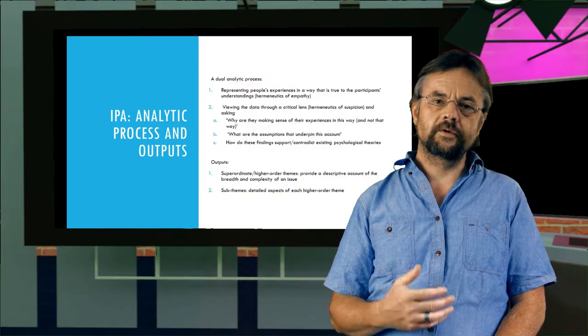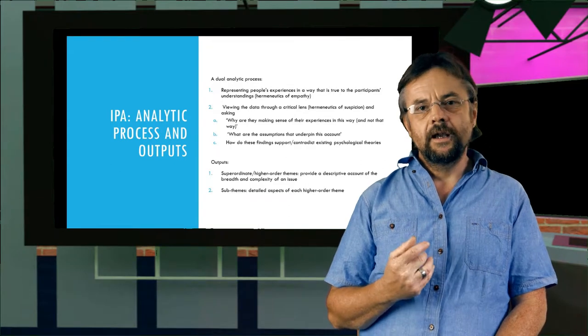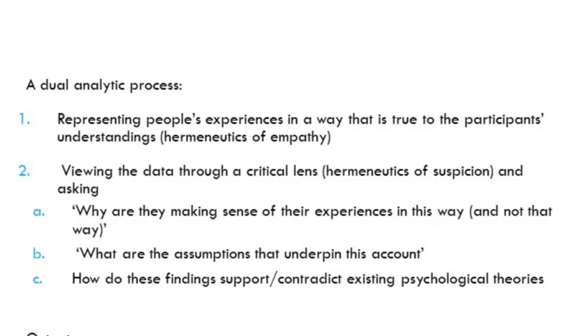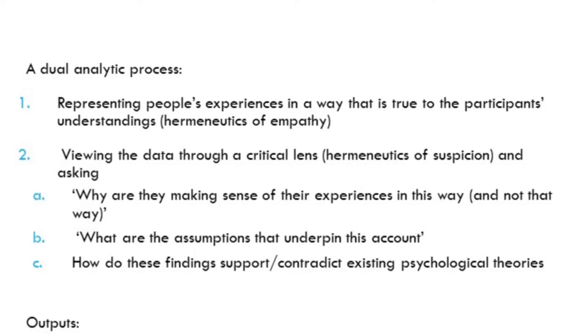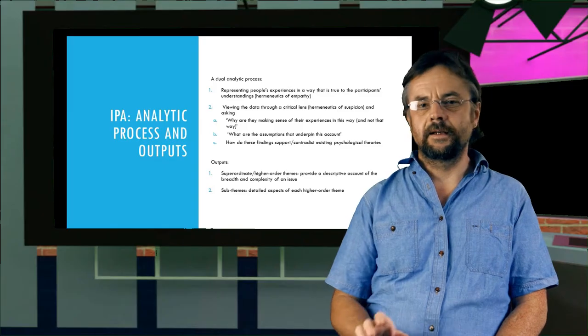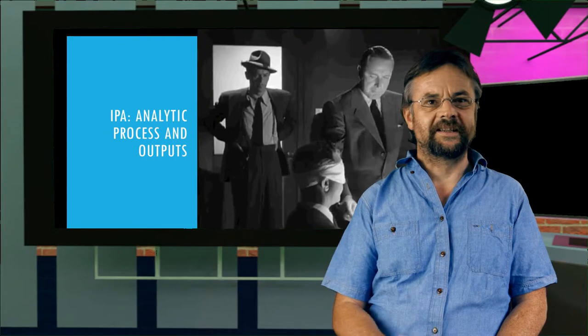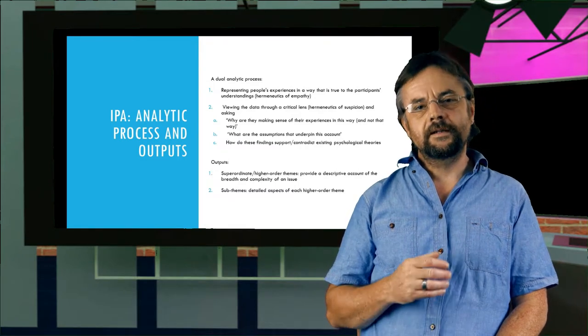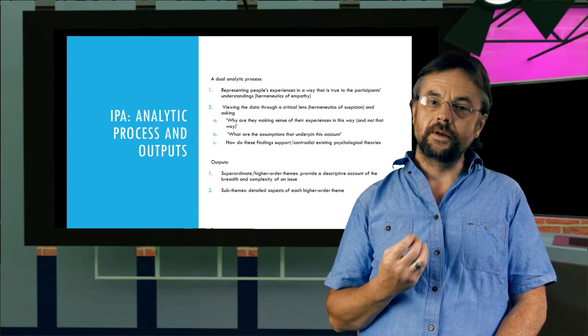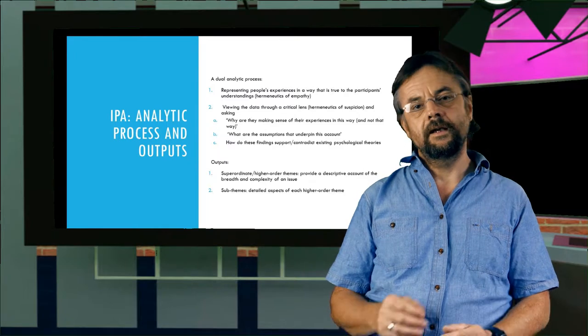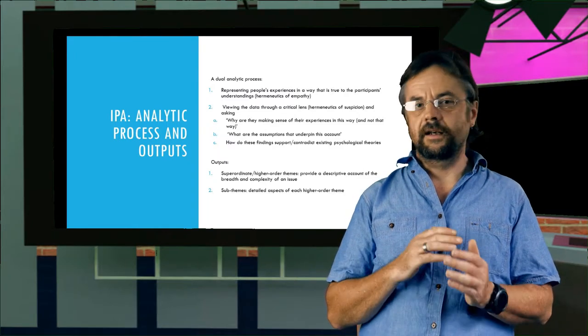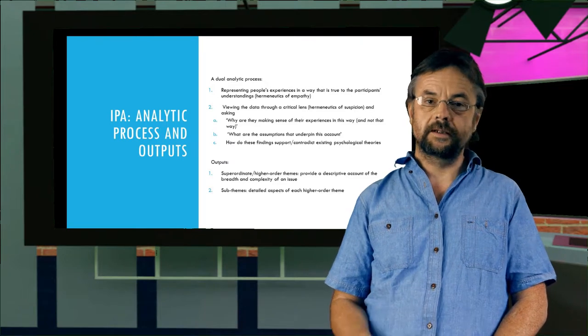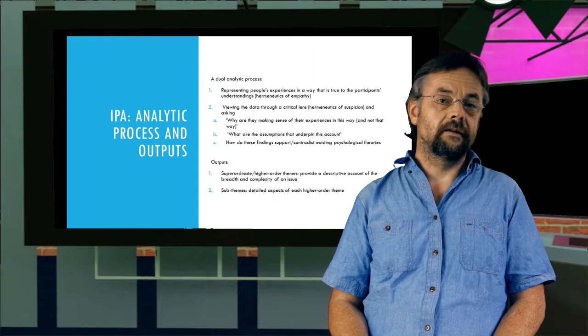It's also a second purpose which is close to interpretive analysis. And here we adopt a critical perspective, and again we call it something fancy. Here it's called the hermeneutics of suspicion. So we're interpreting what the participant says with a degree of suspicion. This doesn't mean we suspect them of lying, but what we do is question why they're talking about their experience in a particular way.